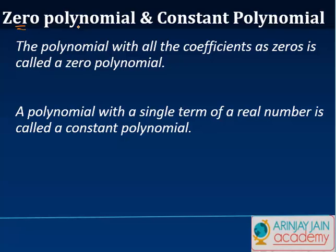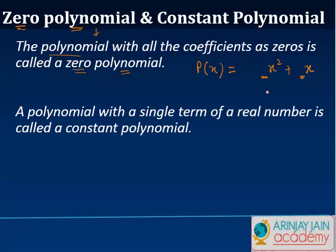The first one is a zero polynomial. This means that a polynomial p(x) with all coefficients as zero is called a zero polynomial. If you have a polynomial like x² + x, the coefficients are the real numbers which precede these variables. A zero polynomial is one where all these coefficients are zero, so p(x) effectively becomes zero.